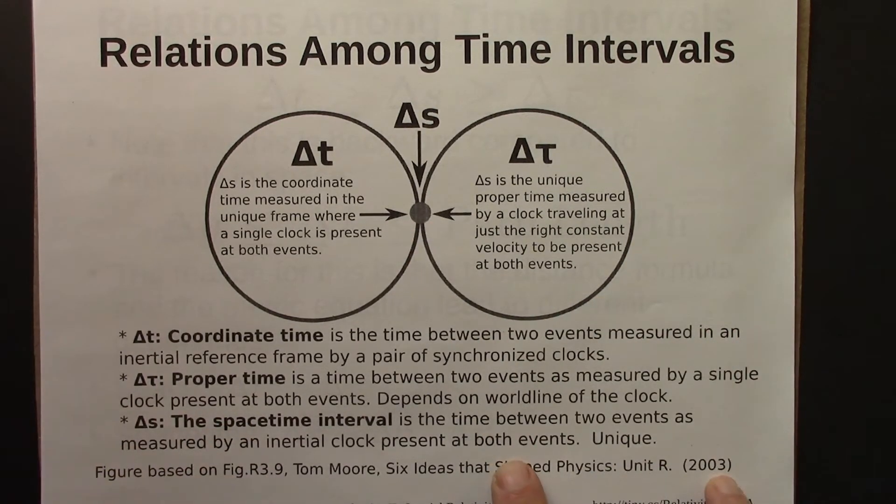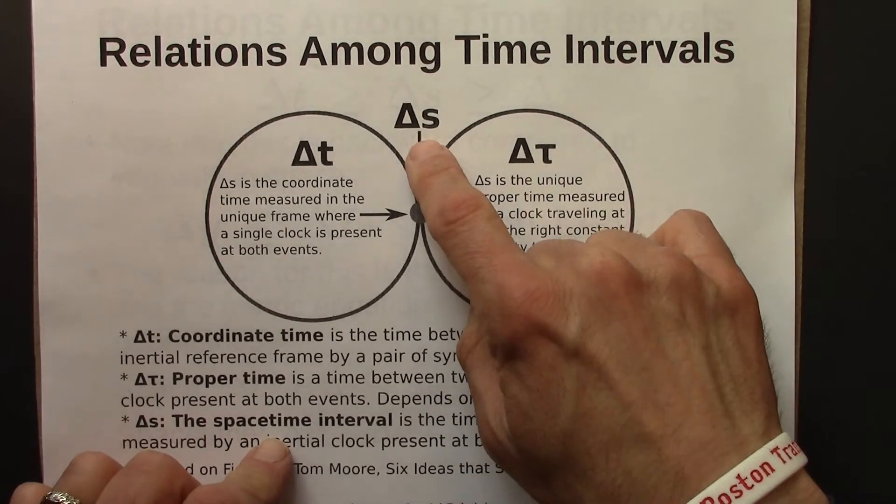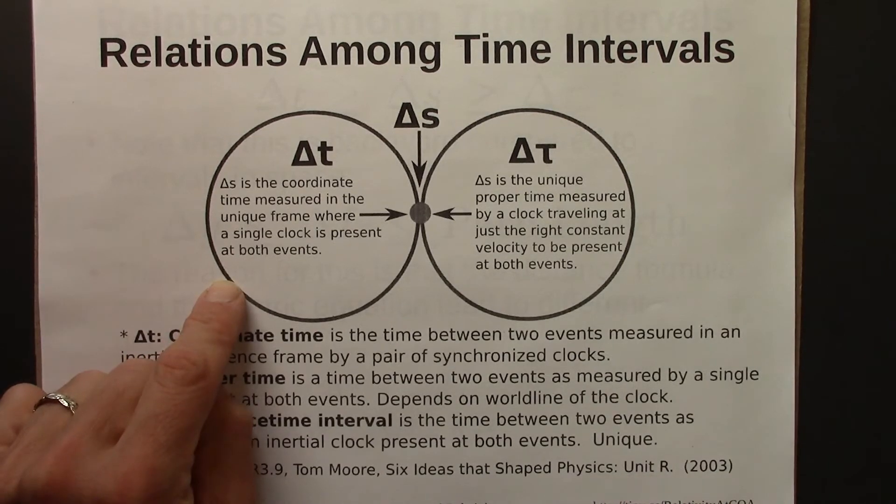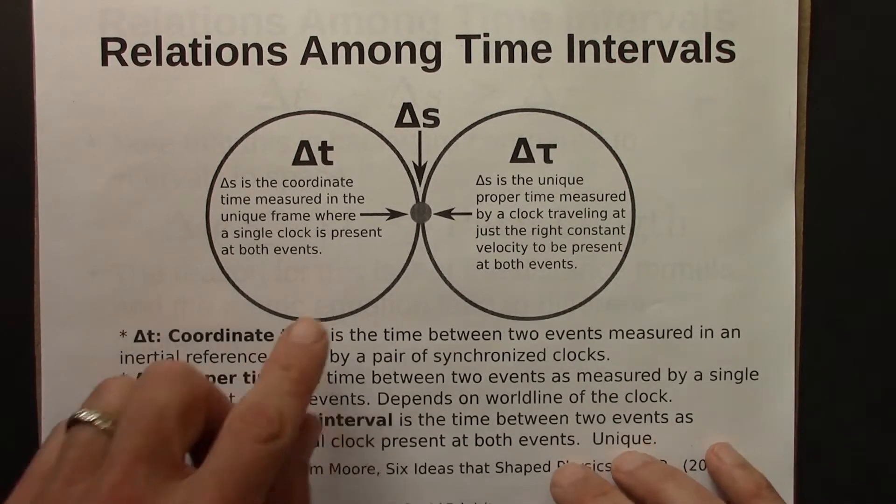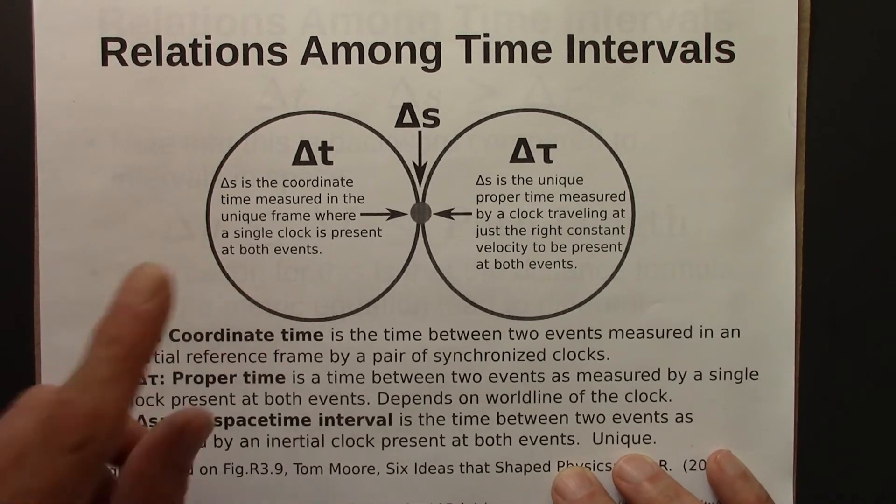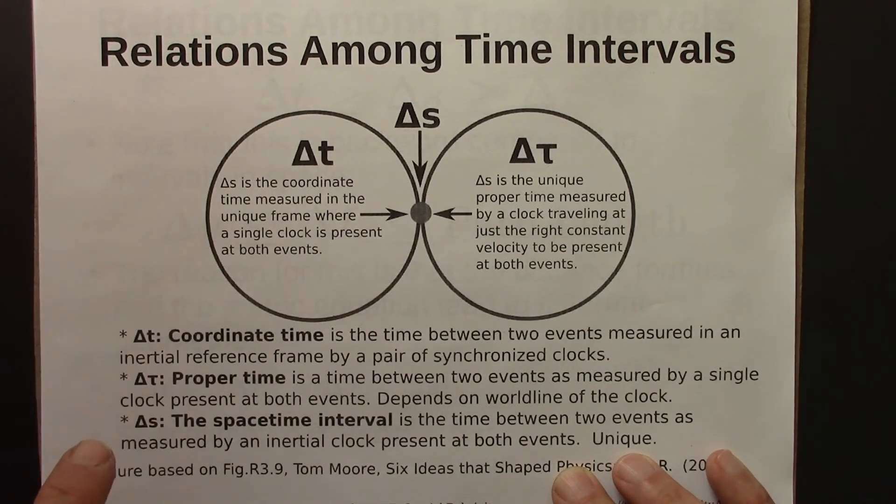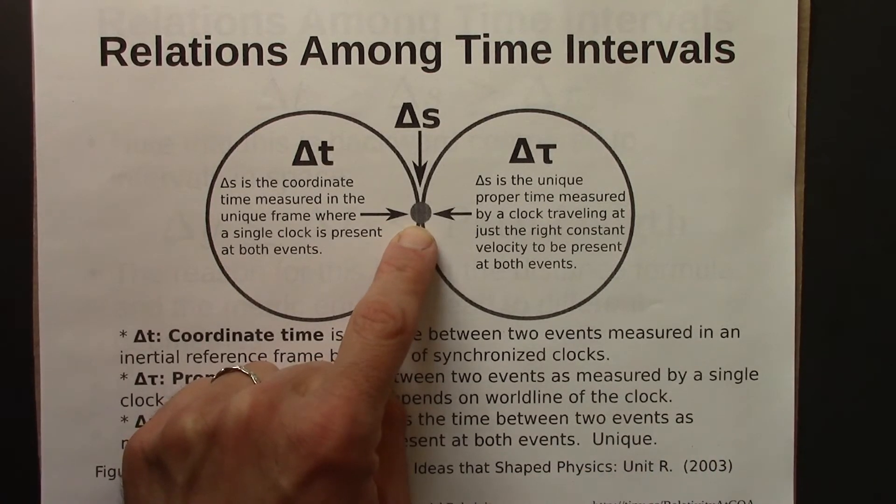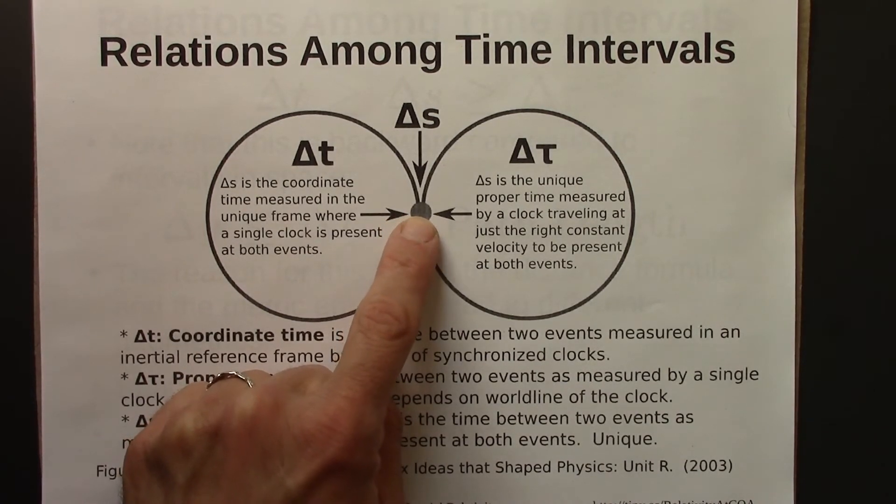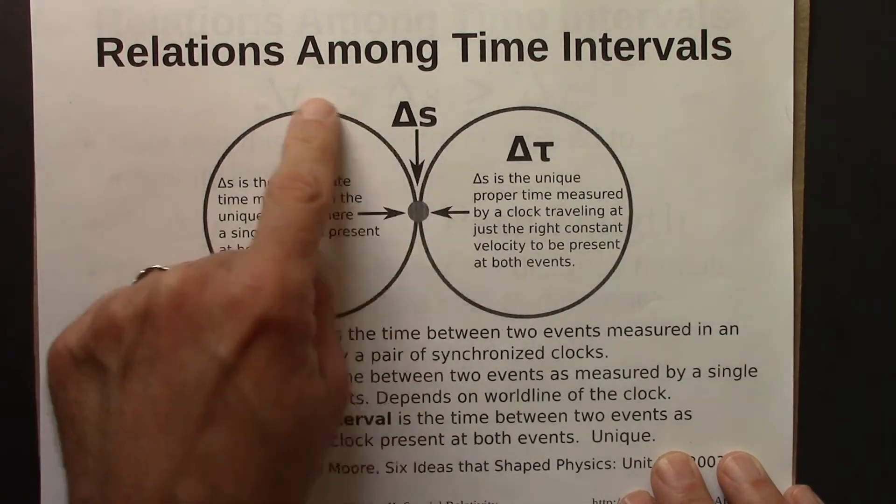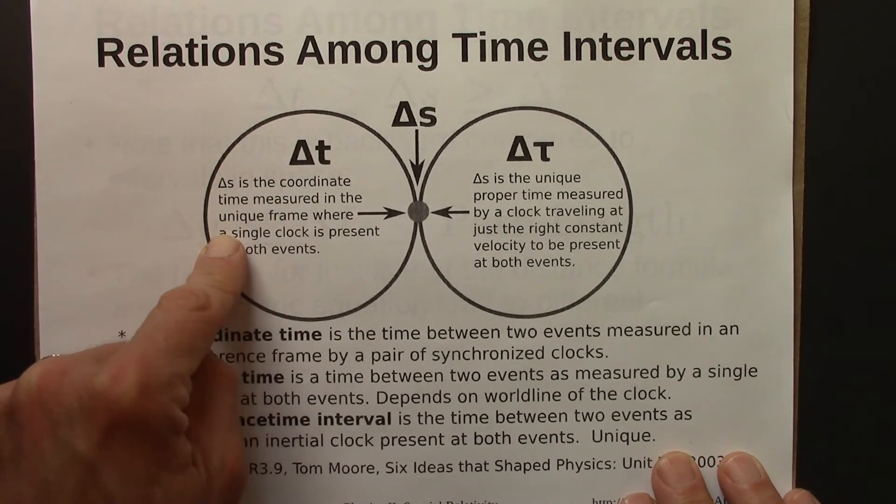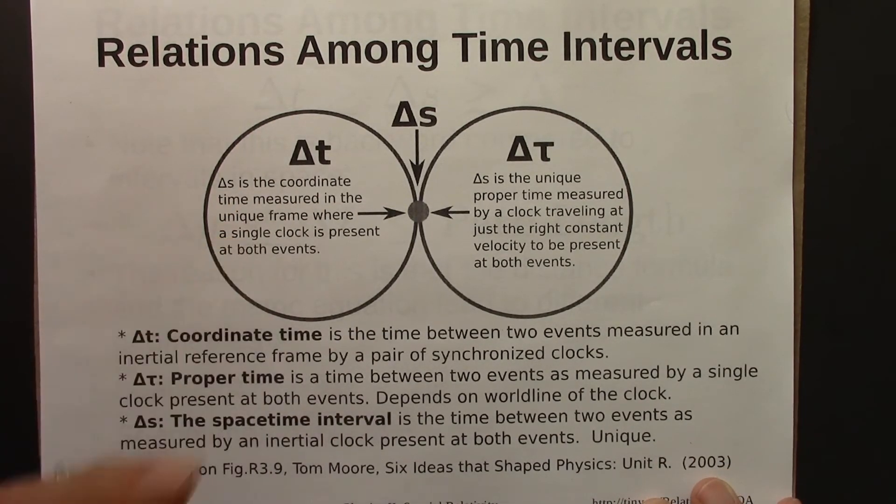Remember, the space-time interval is the time interval between two events as measured by an inertial clock that's present at both events. Coordinate time is time measured in an inertial reference frame. So some coordinate system were set up with clocks. And the particular reference frame where there's a clock that happens to be present at both of the events, that would be a coordinate time that's also a space-time interval. But there are lots of other coordinate times that aren't space-time intervals, where the two events in question occur at different locations.